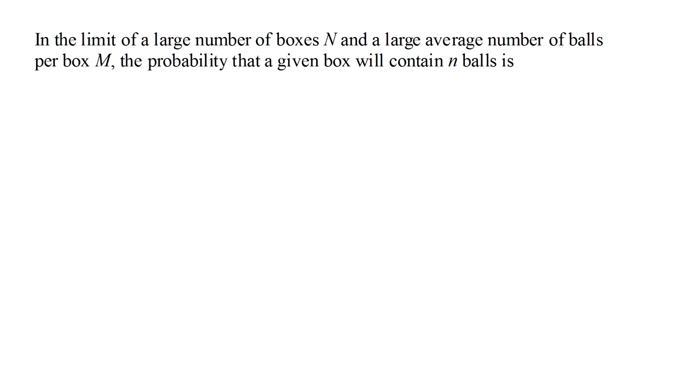In the limit of a large number of boxes n, and a large average number of balls per box m, the probability that a given box will contain little n balls is 1 over m times e to the minus n over m, a decreasing exponential distribution.